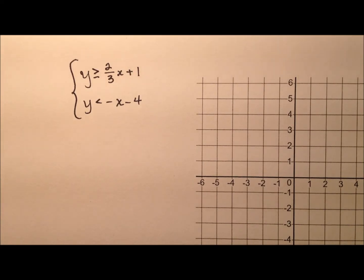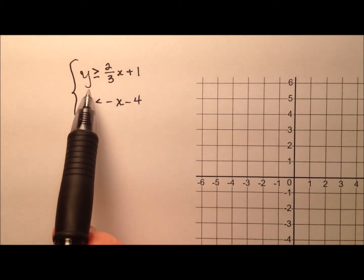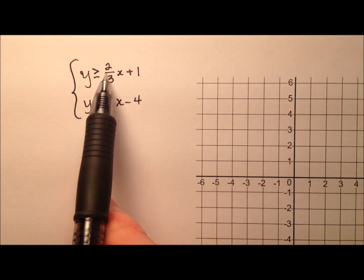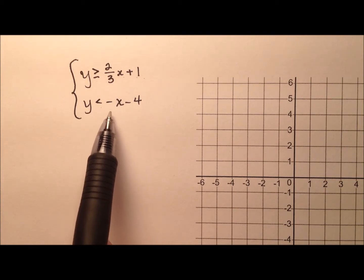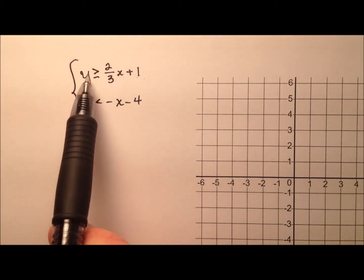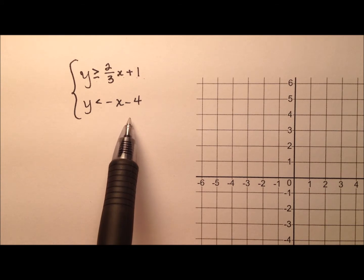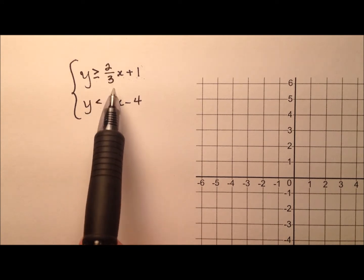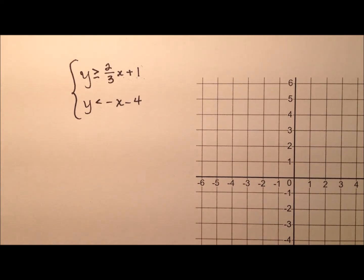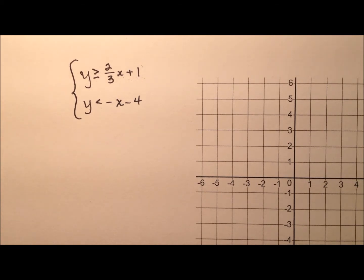In this video, I want to give you a quick introduction for solving and graphing systems of linear inequalities. So here we have a system. The first inequality is y is greater than or equal to 2 thirds x plus 1, and the second inequality is y is less than negative x minus 4. Each of these is already in slope-intercept form, so all we have to do is grab the y-intercept for our starting point and the slope for our rate of change, and we can easily graph the lines. Since it's a system of inequalities, we'll actually be shading a portion of this graph.